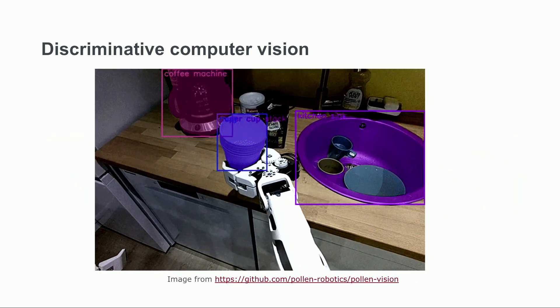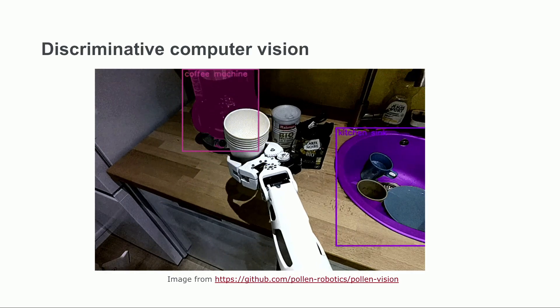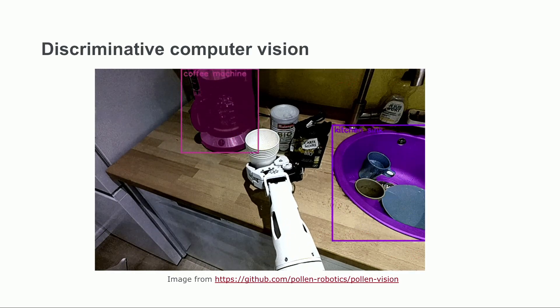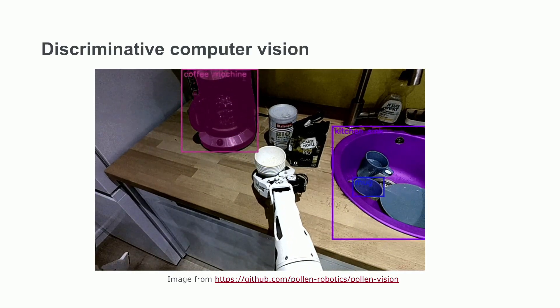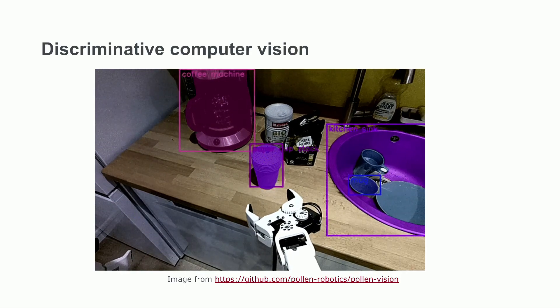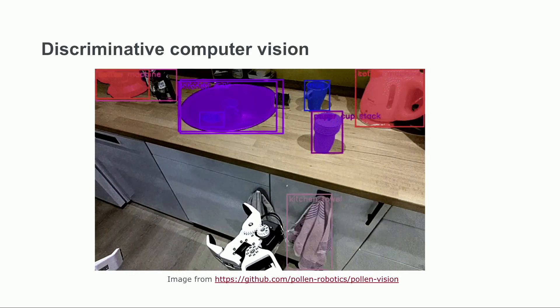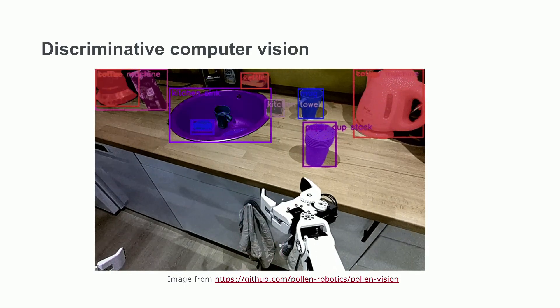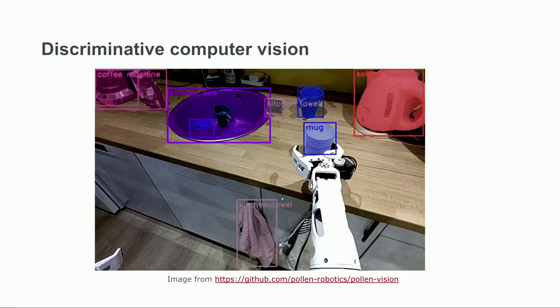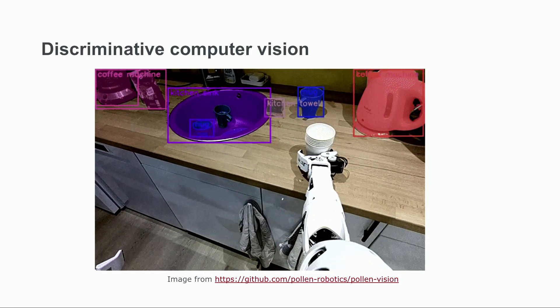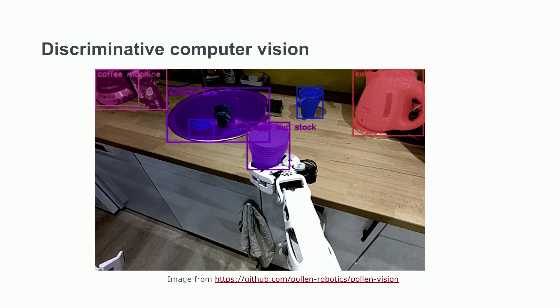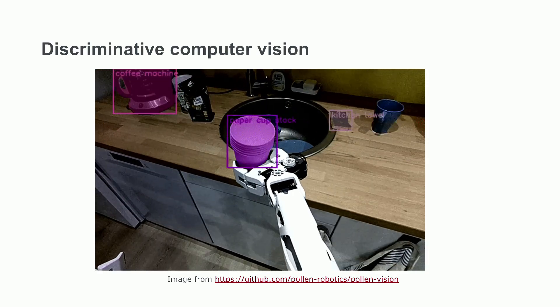Among computer vision practitioners, the quality of labeled data is often considered more important than model architecture, as well-curated training datasets can dramatically improve model performance. We will examine example use cases for discriminative tasks, and we will explore how we can use models to help us curate datasets.